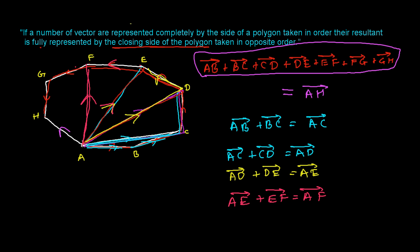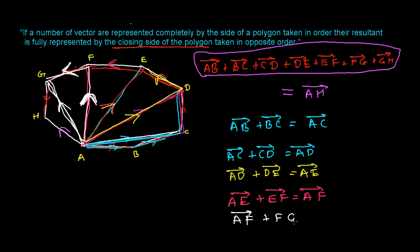I do this one more time by connecting A and G. Triangle AFG is formed. In this triangle, the two sides AF and FG are taken in one order, and the third side represents their resultant. So AF + FG = AG.